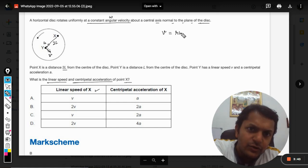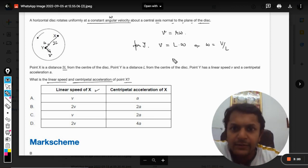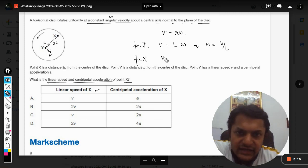For Y it will be v equals the radius is given as l, and omega is constant, so omega will be given by omega. So we can write omega equals v by capital L. And for X I can say that v dash will be equal to r omega again.